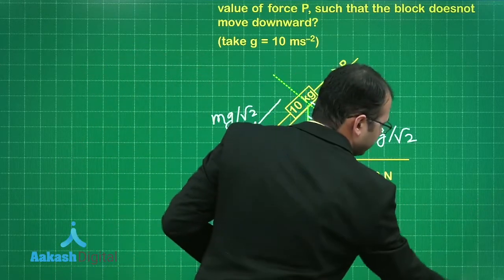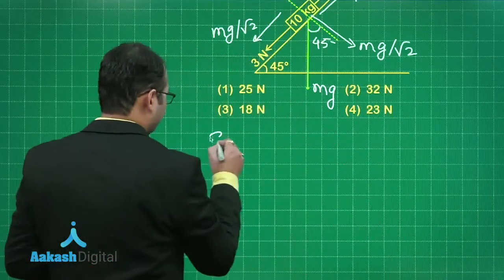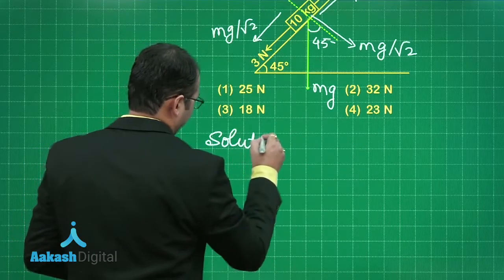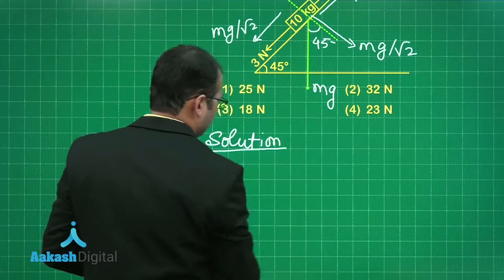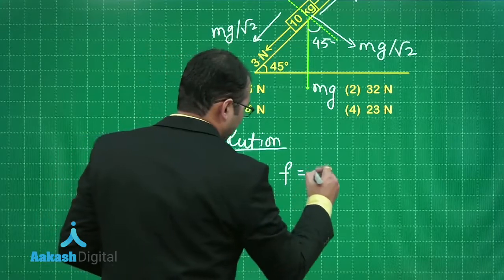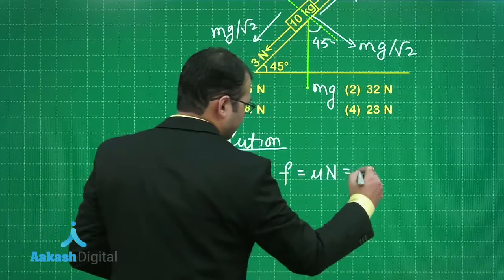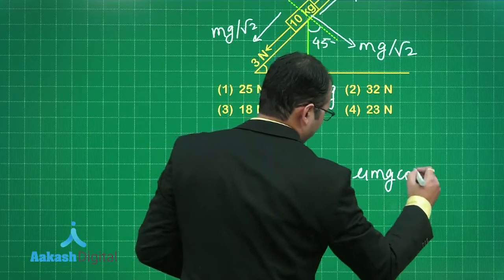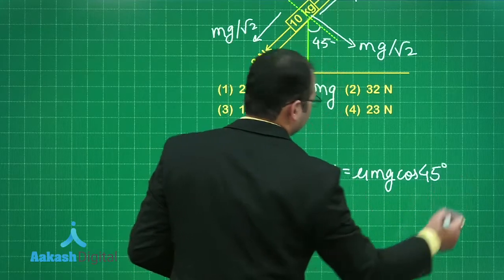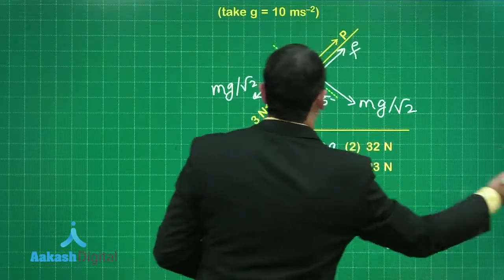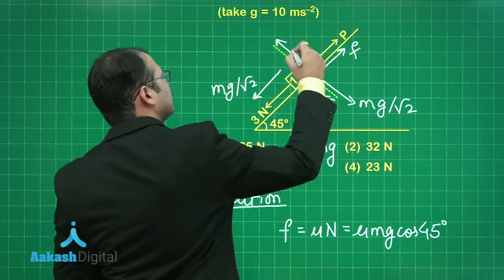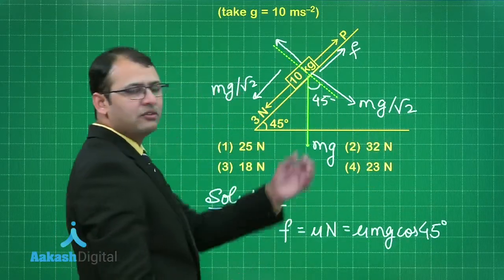Let's start with the solution. First of all friction would be equal to mu into n that is equals to mu Mg cos of 45 degree as you can see in the diagram normal reaction will be acting upwards and that is equals to Mg cos 45 or Mg by root 2.